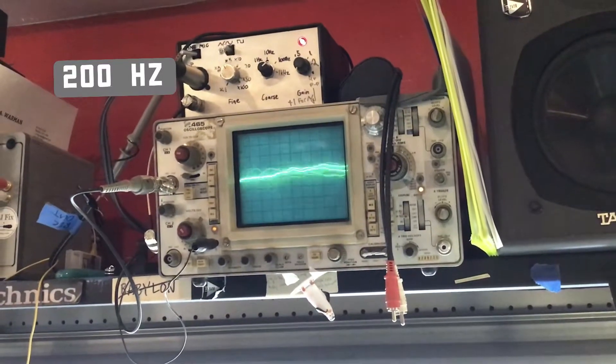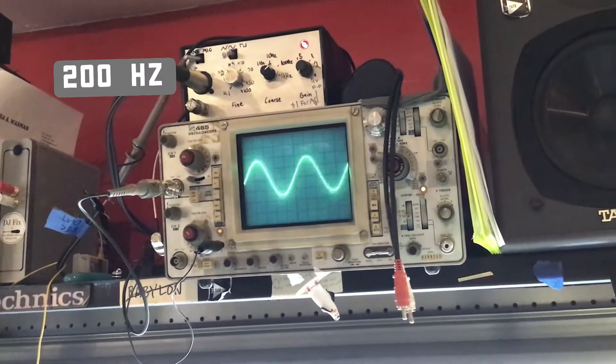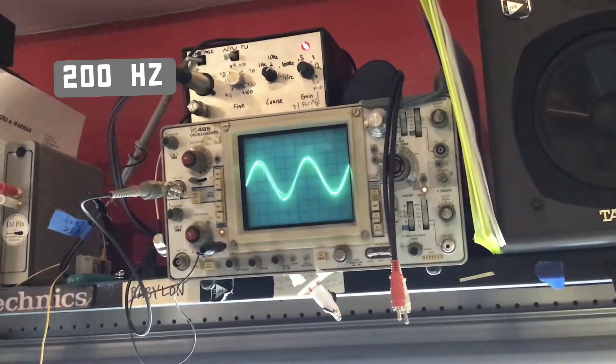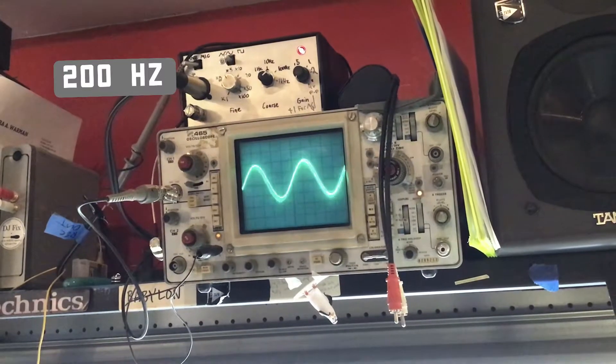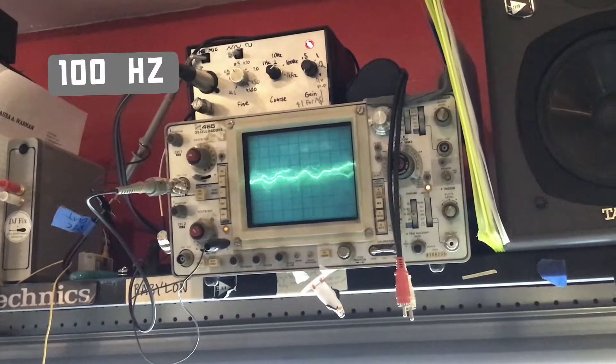200 cycles, 200. Looks good. Maybe just a skosh lower than the other responses, which is not a bad thing. Too much buildup of 200 can make stuff sound a little woofy.